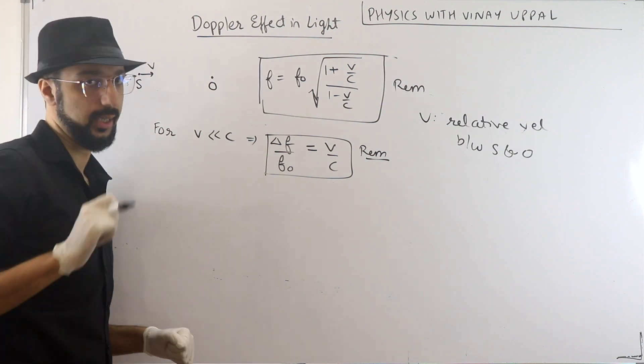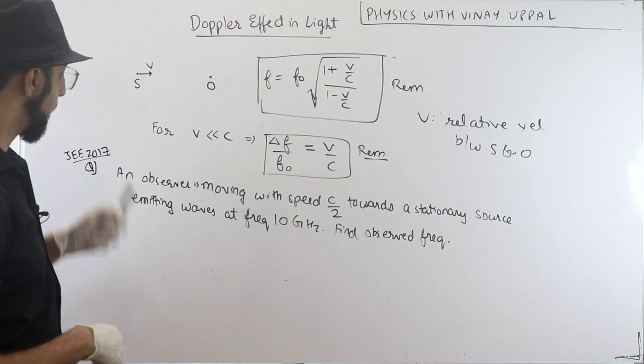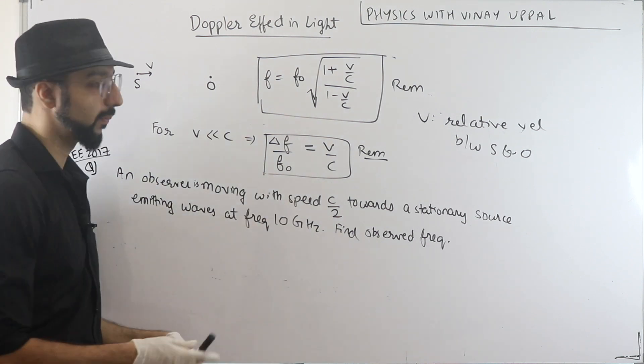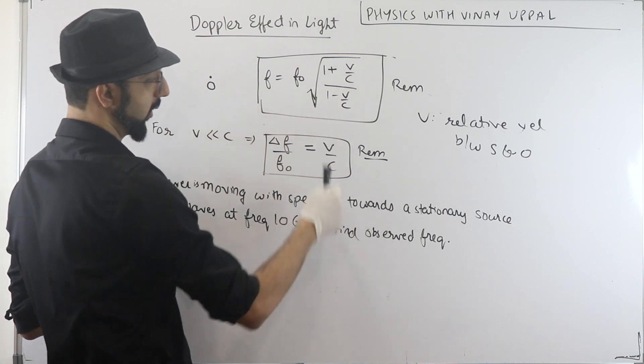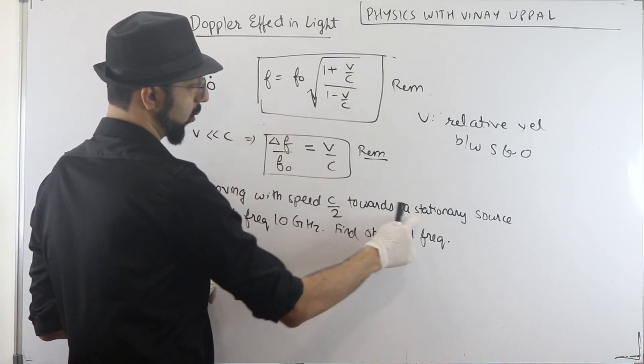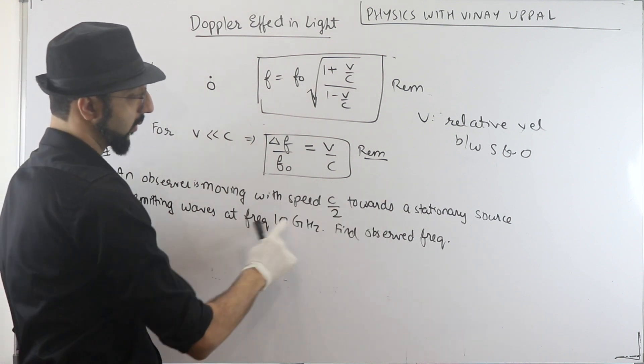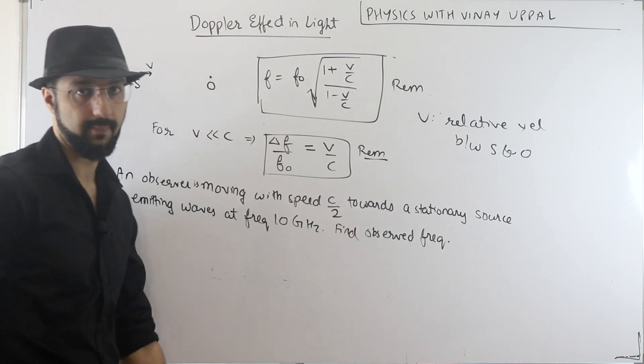How will it come? So let's look. In 2017, there was a question. An observer is moving with speed c by 2, c is the speed of light. Now you can see the speed of light in vacuum. Speed c by 2 towards a stationary source, which is emitting waves at frequency 10 GHz. So the source frequency is 10 GHz. Find the observed frequency.